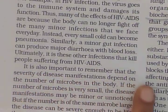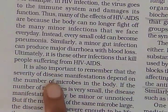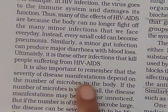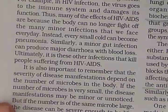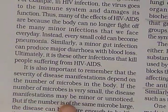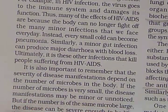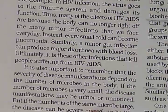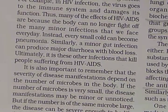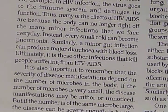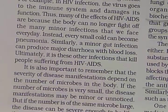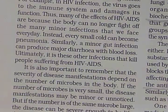It is also important to remember that the severity of disease manifestation depends on the number of microbes in the body. If the number is small, the manifestation may be minor or unnoticed, but if the number of microbes is large, the disease can be severe enough to be life-threatening. The immune system is a major factor that determines the number of microbes surviving in the body, and we shall look into this factor further.